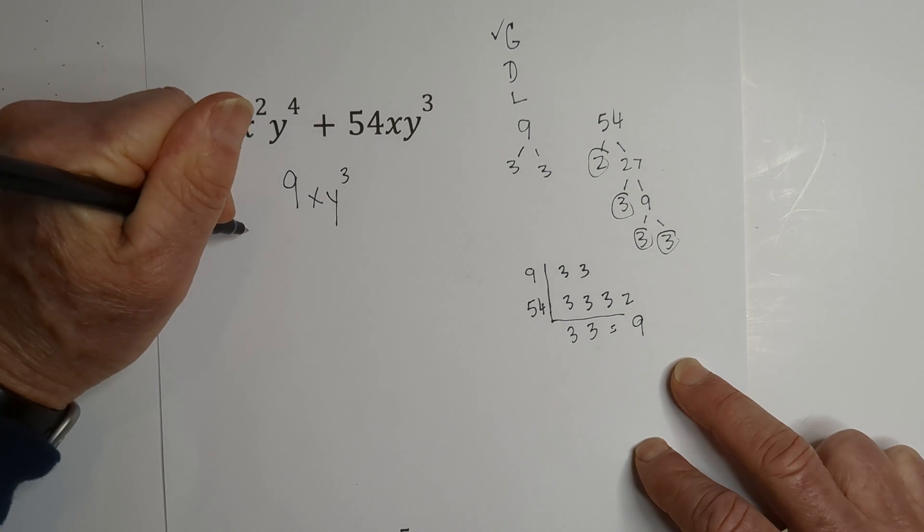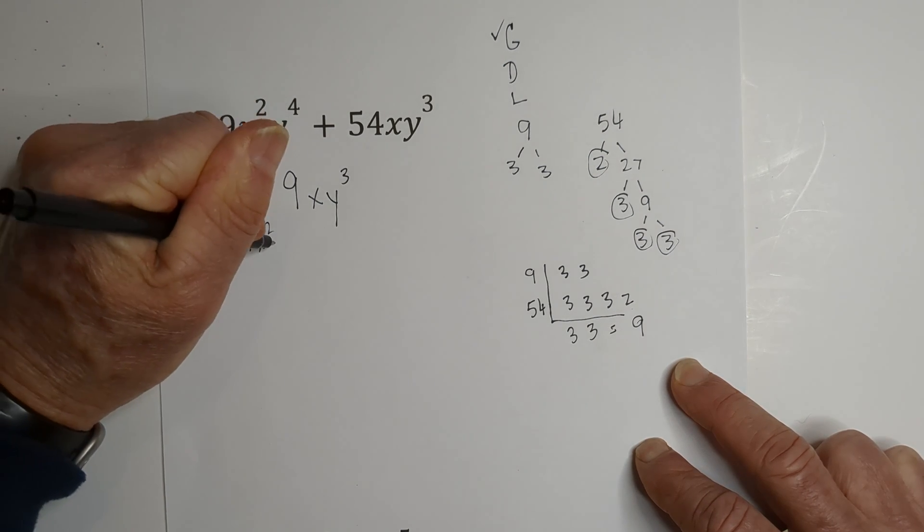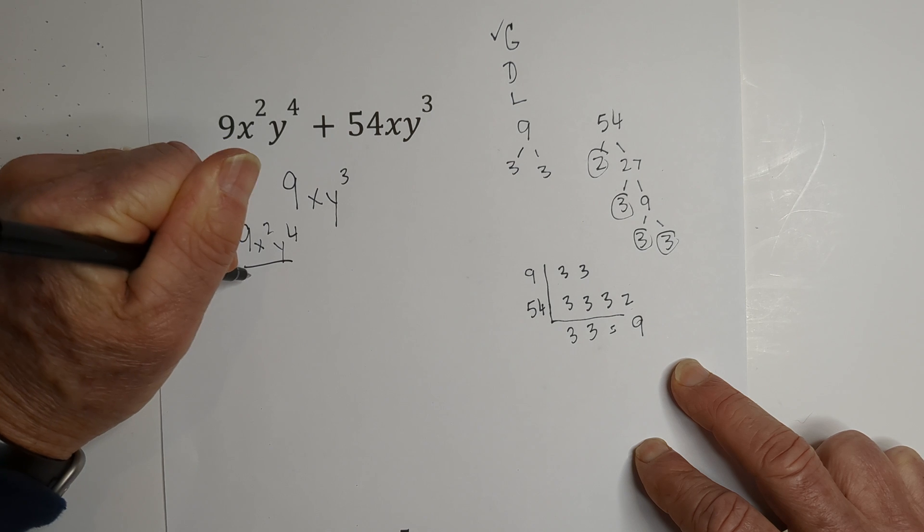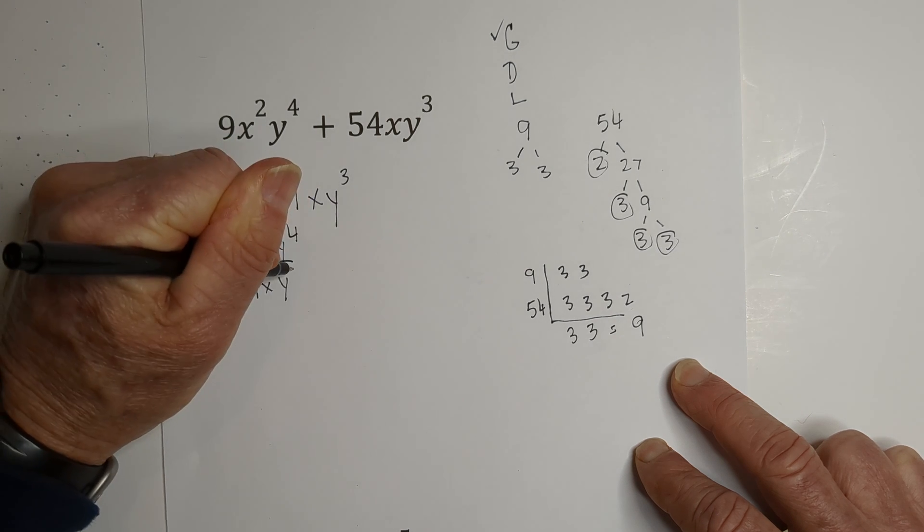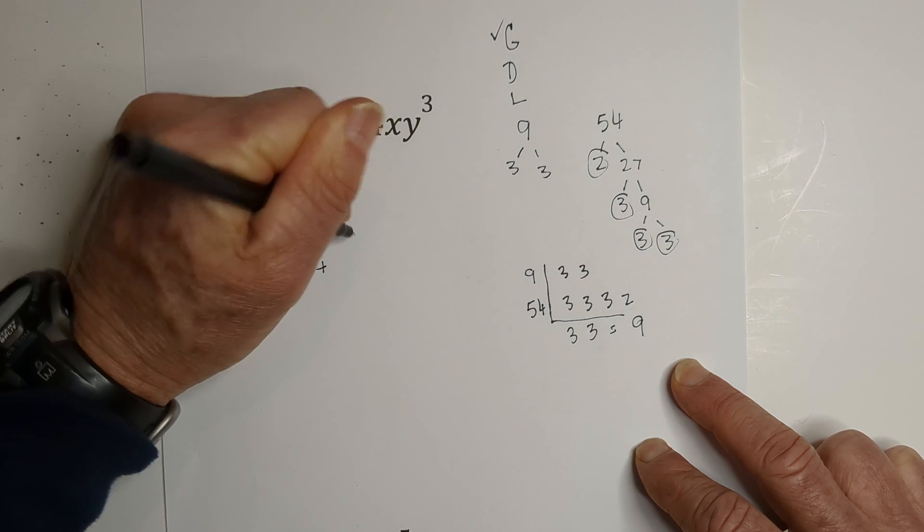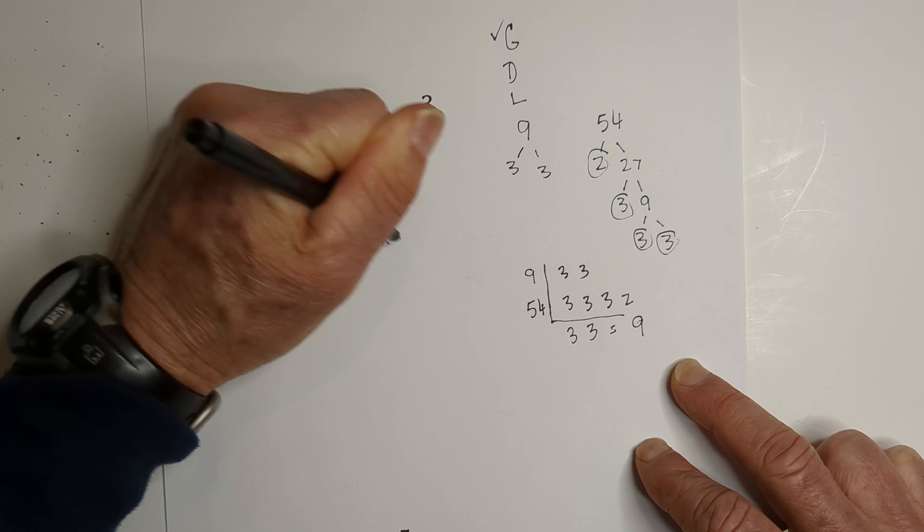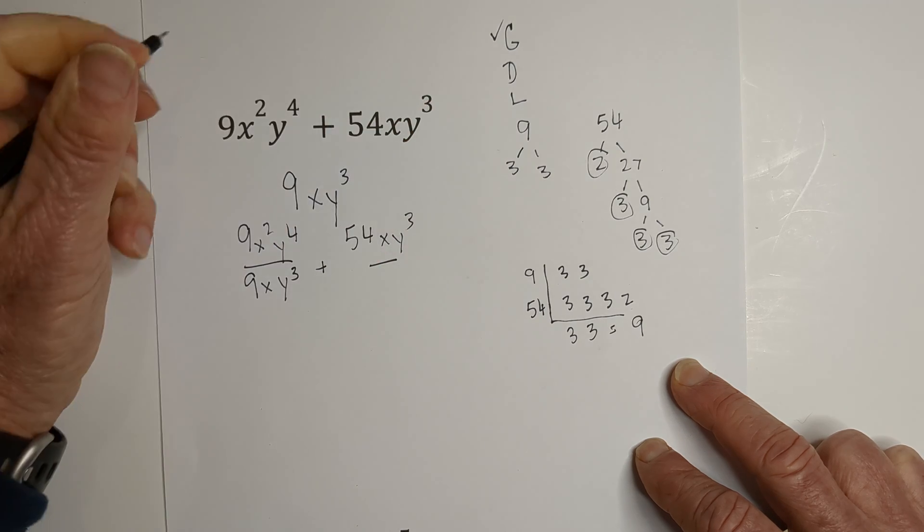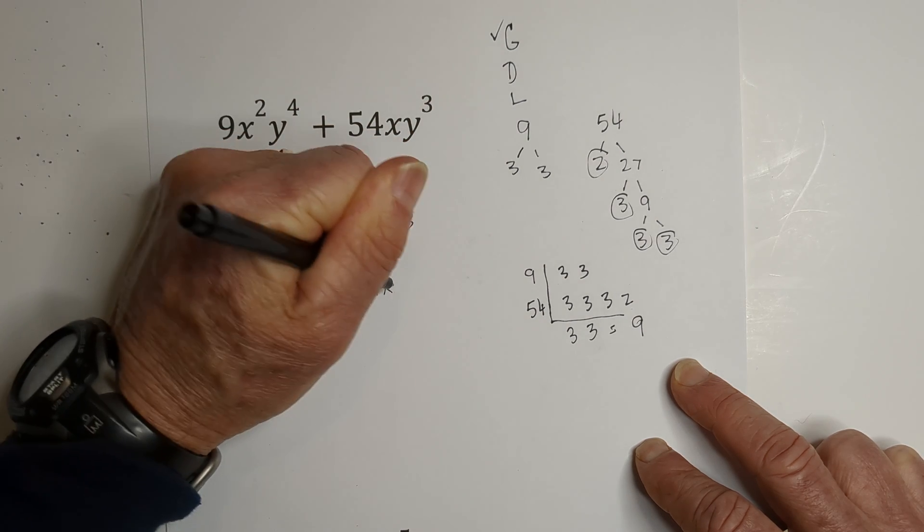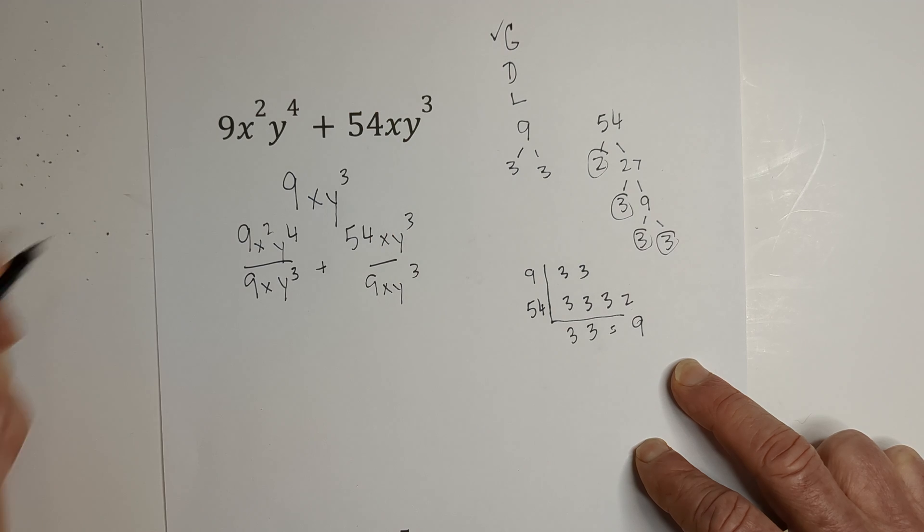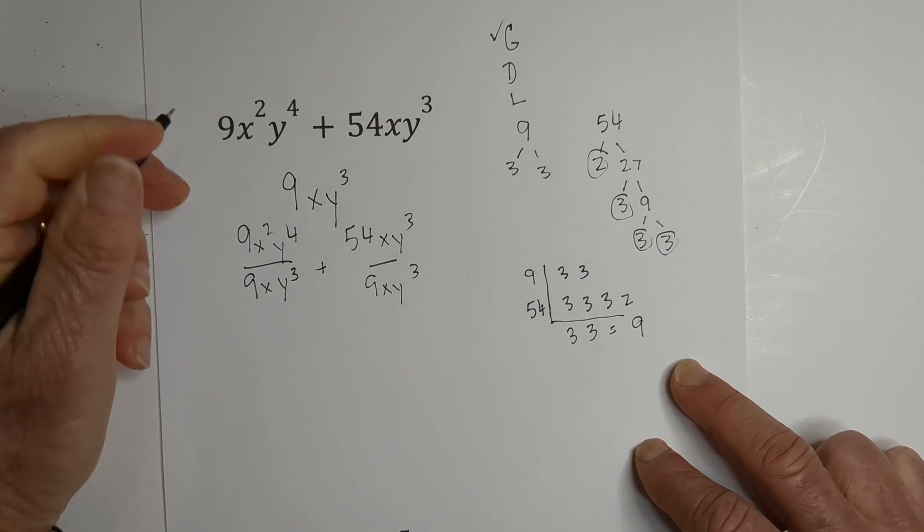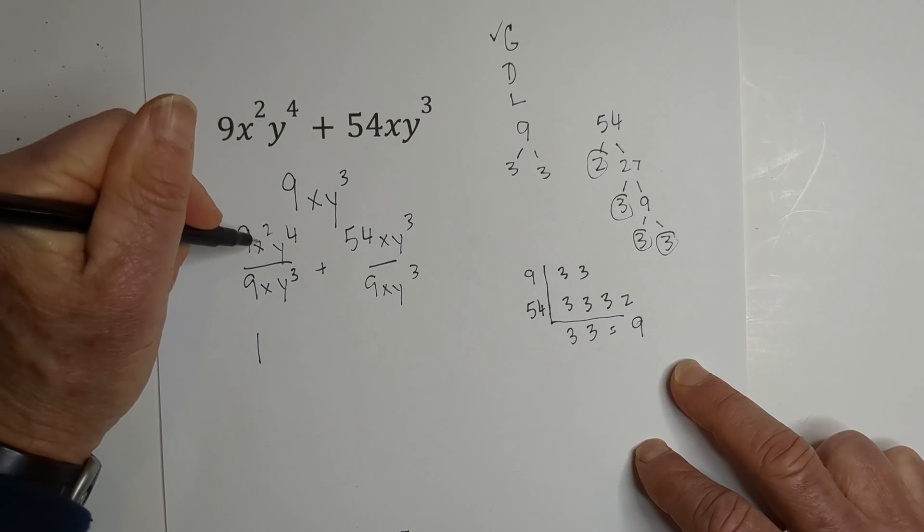Now let's divide. We have 9x^2y^4 divided by 9xy^3, plus 54xy^3 divided by 9xy^3. Nine divided by nine is one.